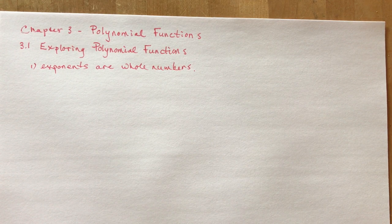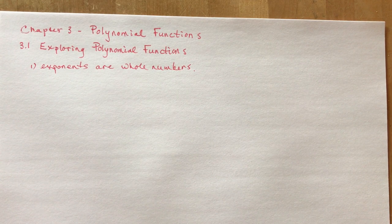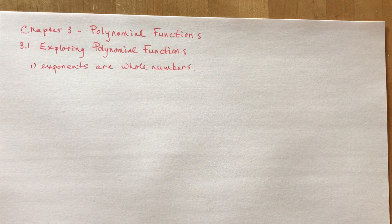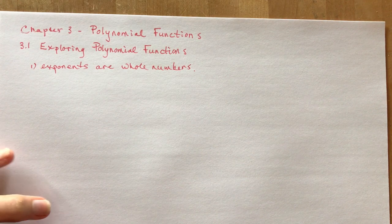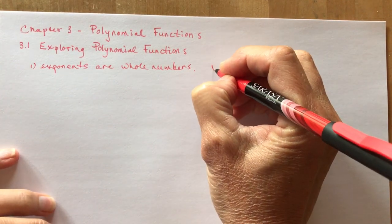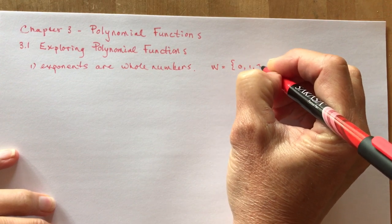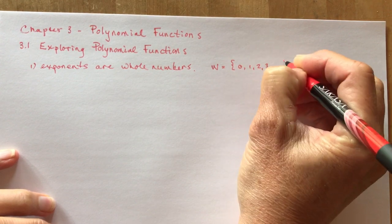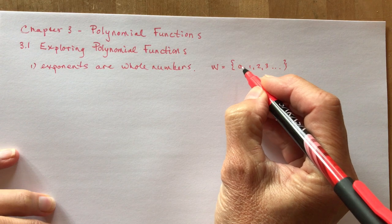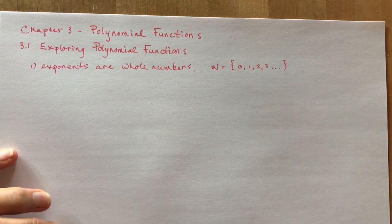The first thing you need to know is that polynomial functions have whole numbers for their exponents. Remember what the definition of a whole number was. The set of whole numbers is 0, 1, 2, 3. So it includes the whole number 0.